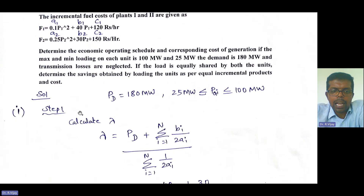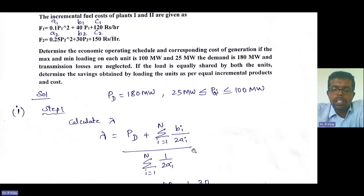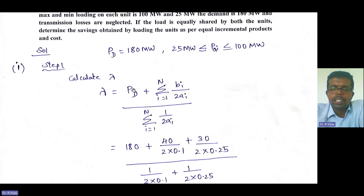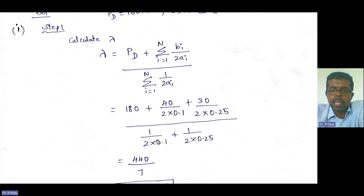What is the first step in the lambda iteration method? Calculate lambda. Lambda is equal to PD plus summation i equals 1 to n of Bi divided by 2Ai, the whole divided by summation i equals 1 to n of 1 divided by 2Ai.